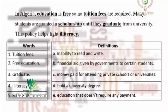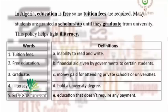The definitions are: inability to read and write; financial aid given by governments to certain students; money paid for attending private schools or universities; hold a university degree; education that doesn't require any payment. Focus on the definitions and see which one starts with a verb and which ones start with a noun — that will help you do your activity.